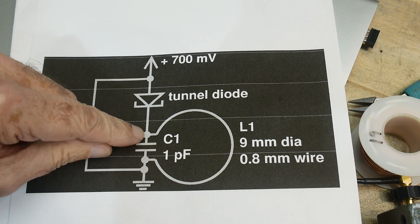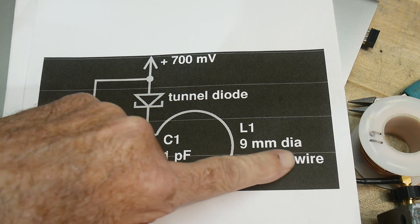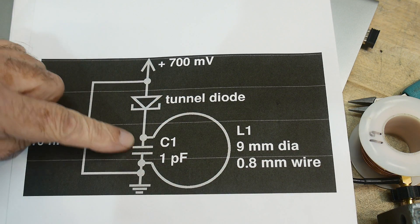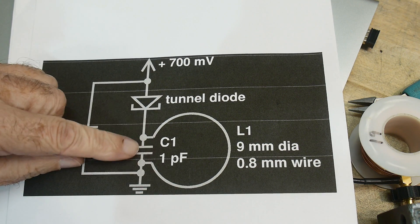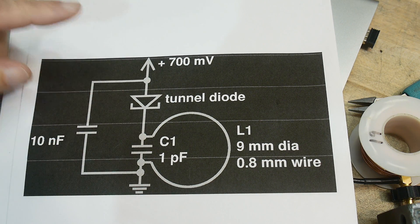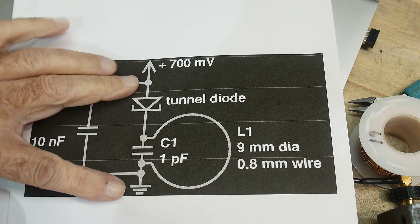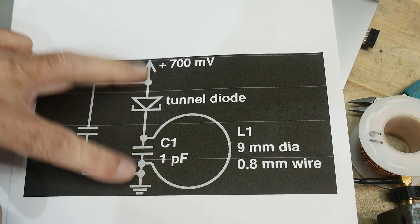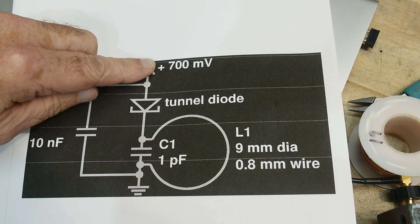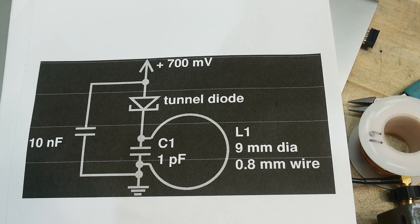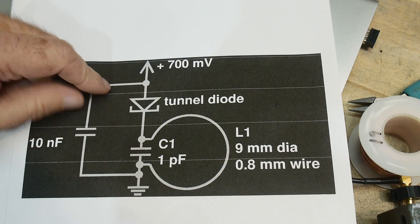There's a tunnel diode and then there's an inductor and a capacitor. So the inductor is just a loop of wire, a nine millimeter diameter loop of wire, and then the capacitor is one picofarad, so not much of a capacitor. There is a 0.01 microfarad over here just to hold the voltage constant. And it's 700 millivolts on the tunnel diode to put it in its negative bias region.